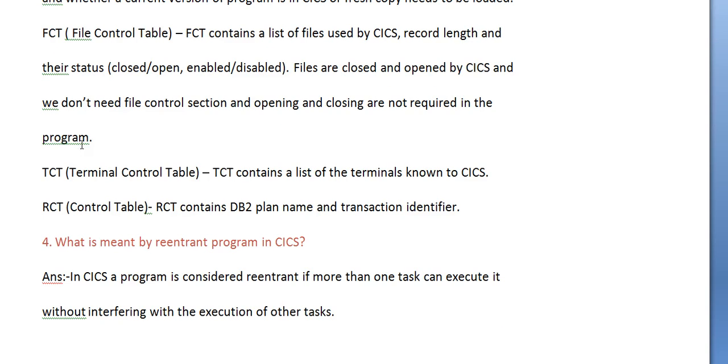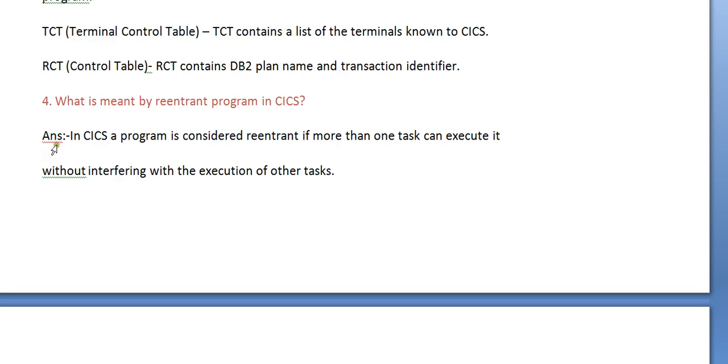TCT (Terminal Control Table) contains a list of terminals known to CICS. RCT (Record Control Table) contains a DB2 plan name and transaction identifier.